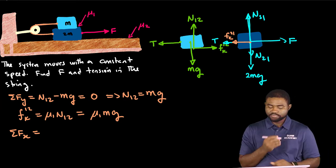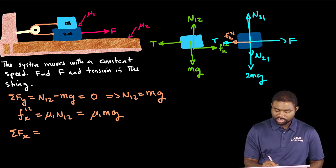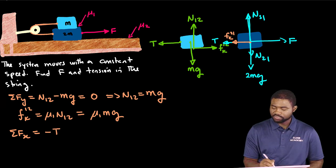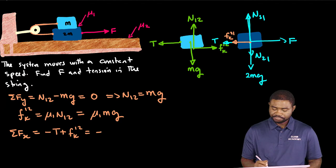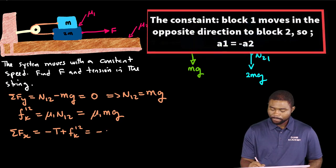And block two is moving to the right. So this will be negative T plus Fk12 equal to negative ma.